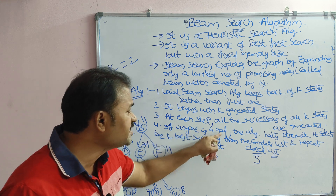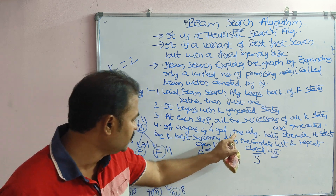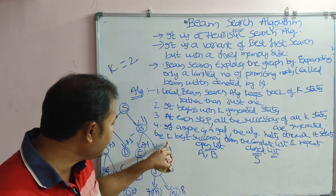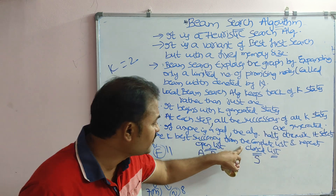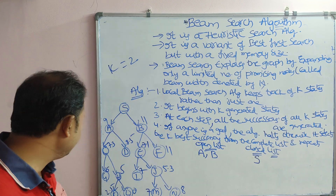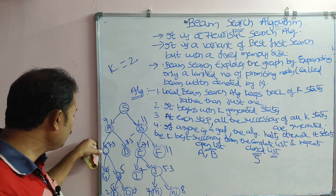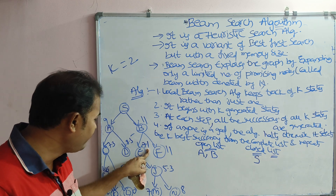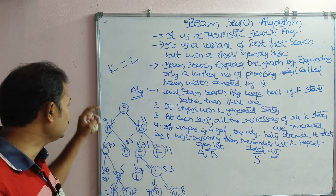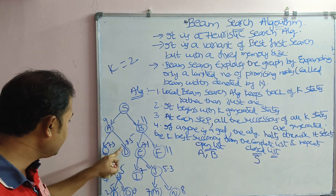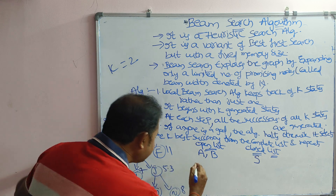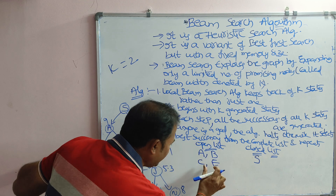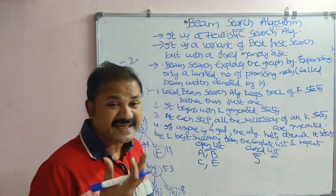Out of all available successors we choose only the best two. If any is a goal node the algorithm halts; otherwise it selects the k best successors from the complete list and repeats. C has heuristic value 7.3, D has 8.5, E has 7.1, F has 11. The two best values are 7.1 and 7.3, corresponding to nodes E and C respectively.